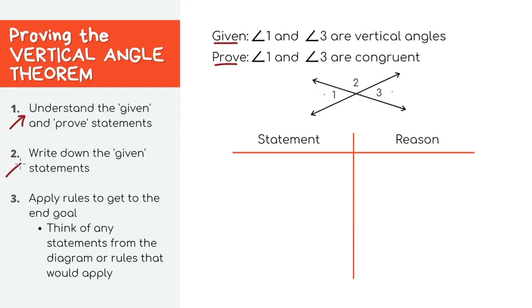Next let's write down the first step which is always the given statement. Let's start applying some rules now. Looking at the diagram we can say that angle one and angle two are supplementary because they're along the same line. Angle two and angle three are also supplementary because they're also along the same line.